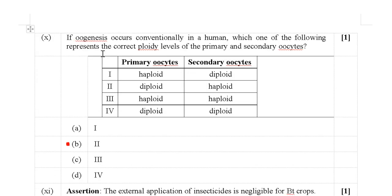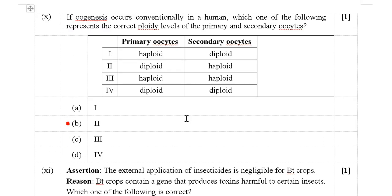Next MCQ: If oogenesis occurs conventionally in a human, which option represents the correct ploidy levels of the primary and secondary oocytes? The primary oocyte is in diploid form (2n), and through meiosis it forms the secondary oocyte where the chromosome number becomes half — haploid (n). Option B (option 2) is the correct answer.